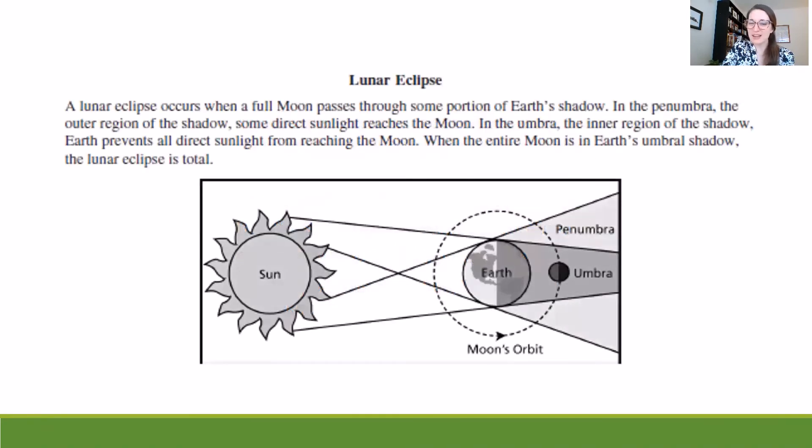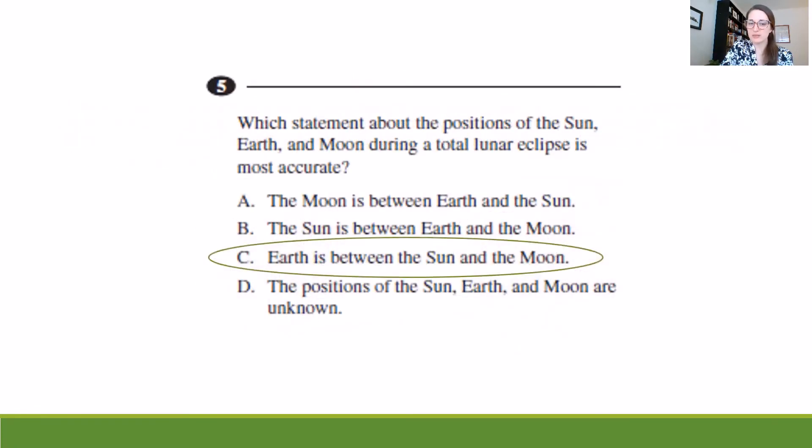So if we look back at our image here, we see sun, earth, moon. And so if we go back to our options, we know that the earth is between the sun and the moon. And that will be the most accurate answer.